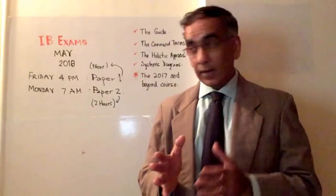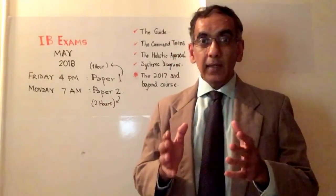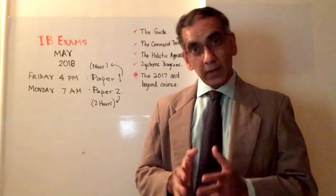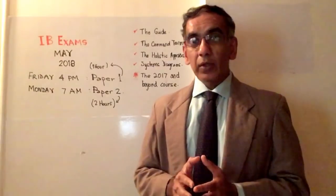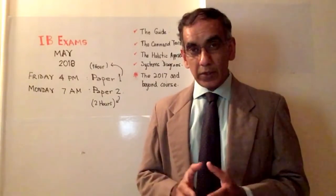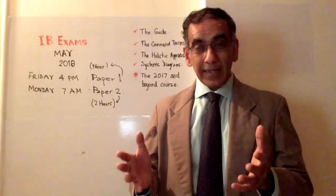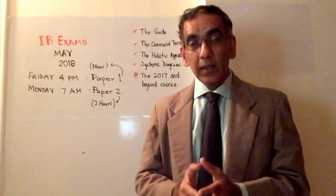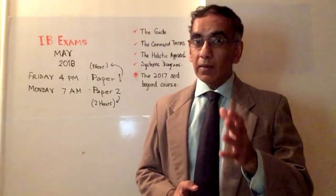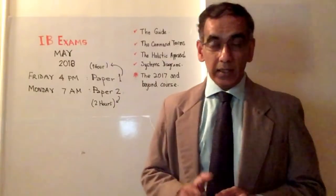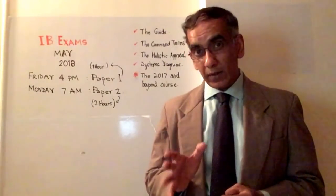And then you have the weekend, and you return on the morning of the 7th of May to take the all-important Paper 2. Paper 2 is divided into two sections. In Section A, you're going to get some short answer questions — might be based on a pie chart, a bar graph, a table, or some kind of data provided to you. You would be extracting that data and also drawing on your knowledge of the ESS guide for first exams in 2017 and beyond to answer the questions.